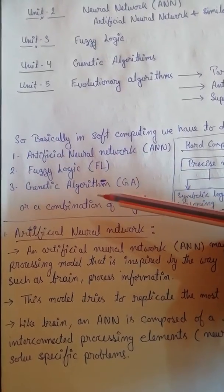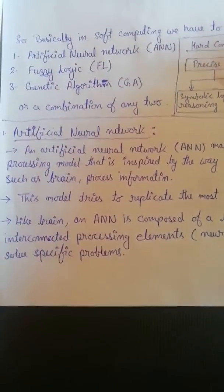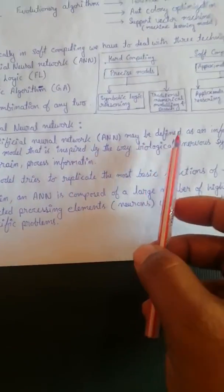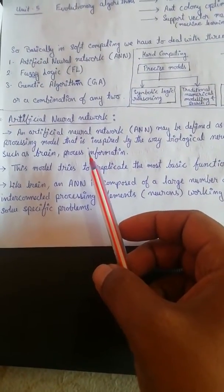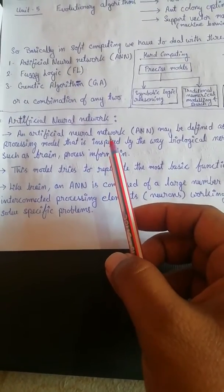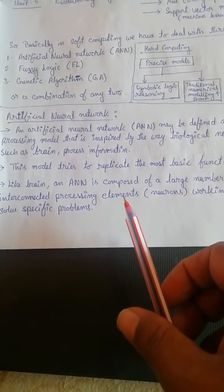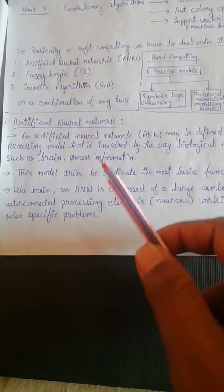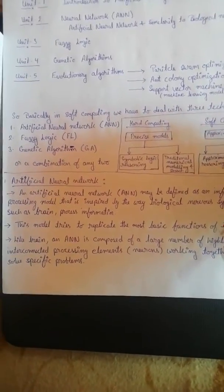That combination will be called hybrid. Now first we'll look at artificial neural network. An artificial neural network is nothing but a network that depends on how your brain works — it takes the idea from how your brain works and then we replicate this model in our computing.